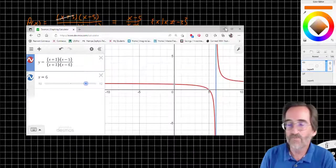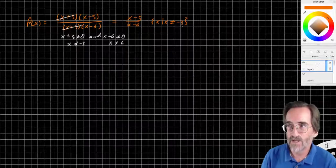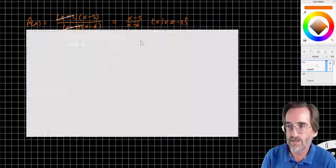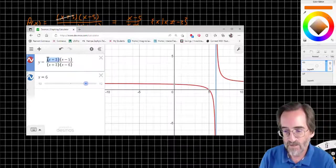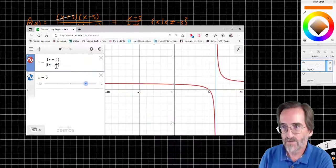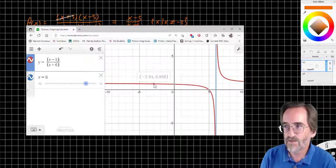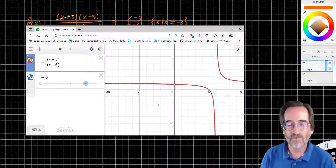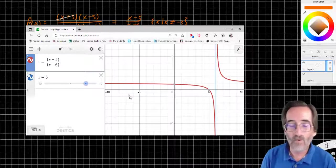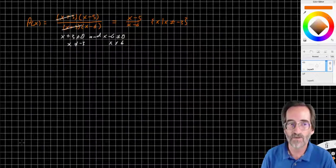It's also called a removable discontinuity because if I allow myself to factor out the x+3s and not put in the domain restriction that x cannot equal negative 3, then this is what I get. Cancel out the x+3s. And now, if I go to negative 3, there is no hole. Negative 3 is there, and it's 8/9. So that hole is removed. That's why it's also called a removable discontinuity. A hole discontinuity is a removable discontinuity.